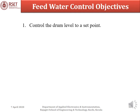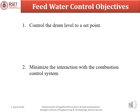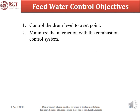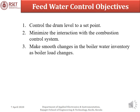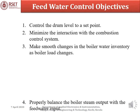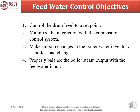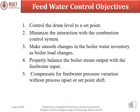The control objectives are: control the drum level to a set point; minimize the interaction with the combustion control system; make smooth changes in boiler water inventory as boiler load changes; properly balance the boiler steam output with the feed water input; and compensate for feed water pressure variation without process upset or set point shift.